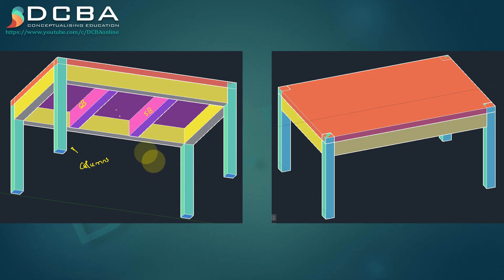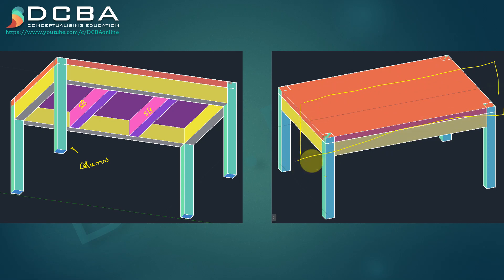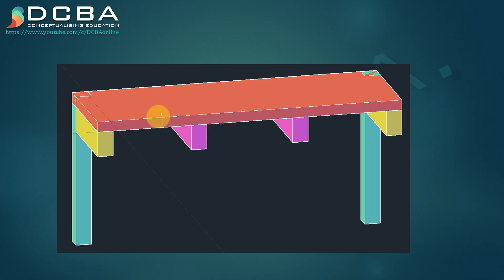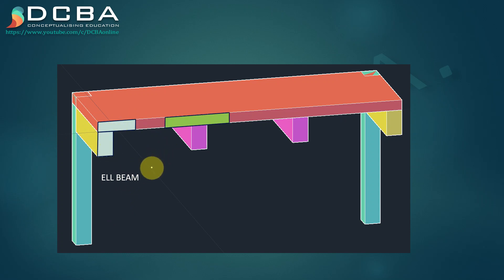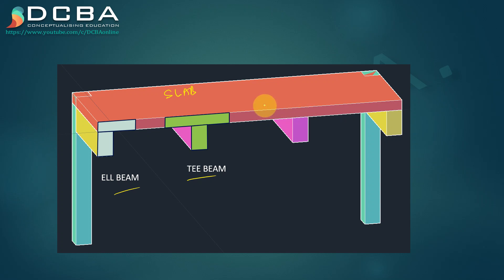The view you're seeing here is from the bottom side and this view is from the top side. Now consider that I cut a cross section here — I take a cross section like this. What I'll be seeing is this, and here I can form two shapes of the beam. The first shape is called an L-beam — you can see how an L is formed. The second shape is called a T-beam. This L-beam and T-beam can only be formed if the construction of the slab and the beams is done together, or monolithically.